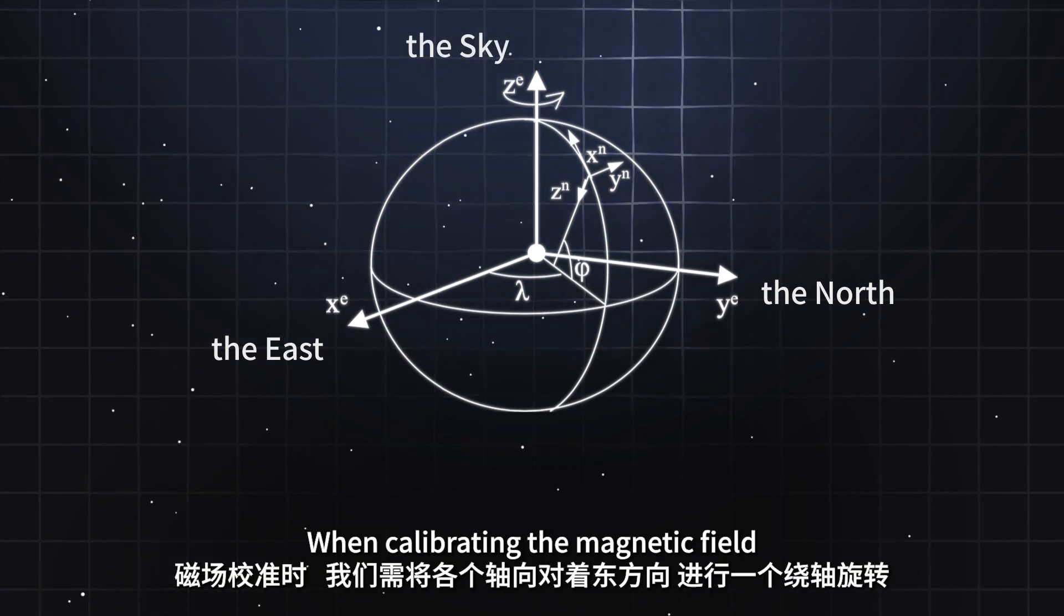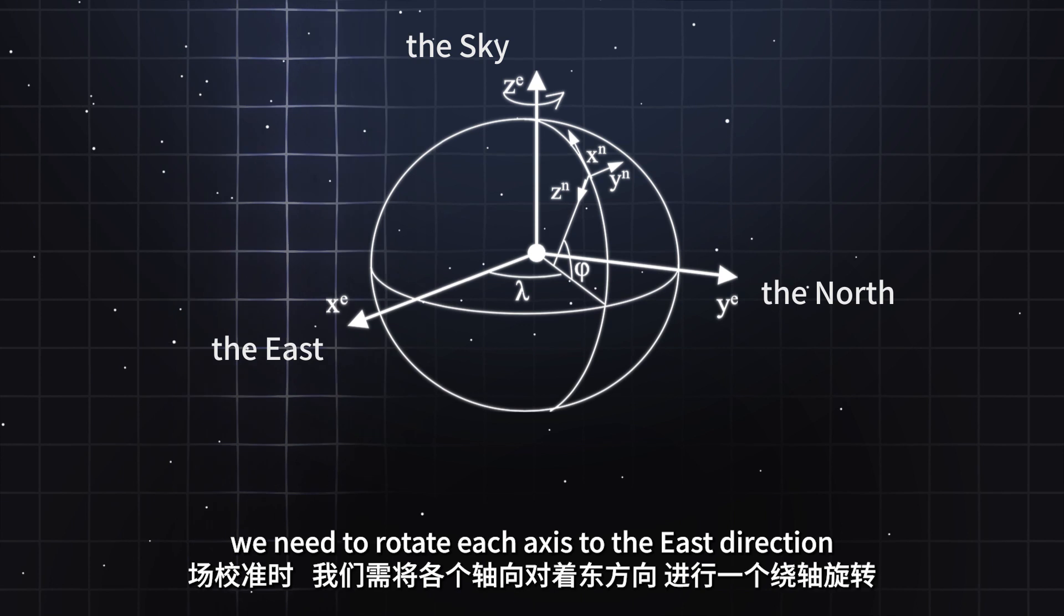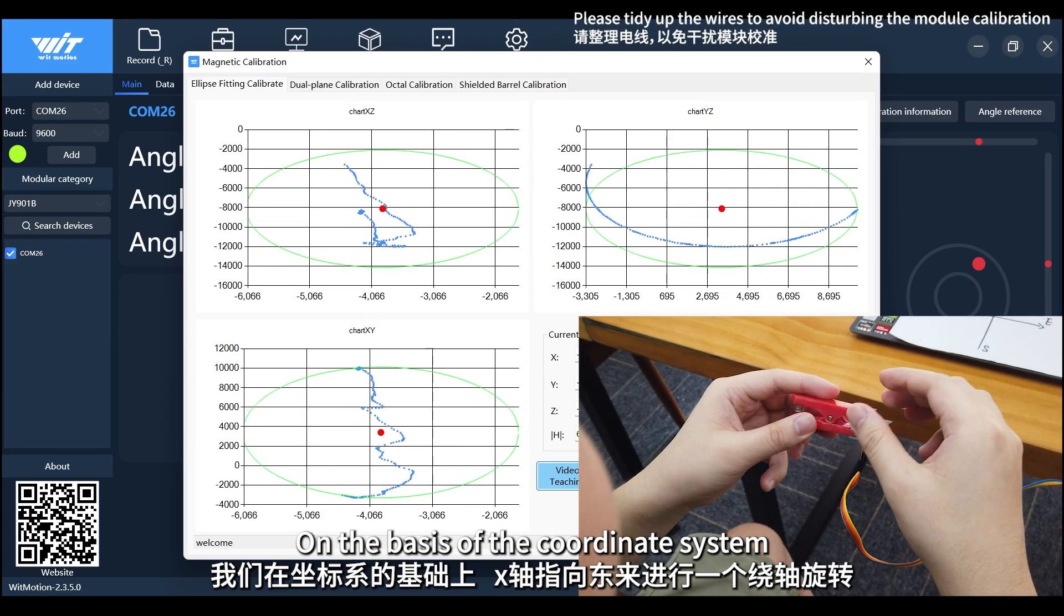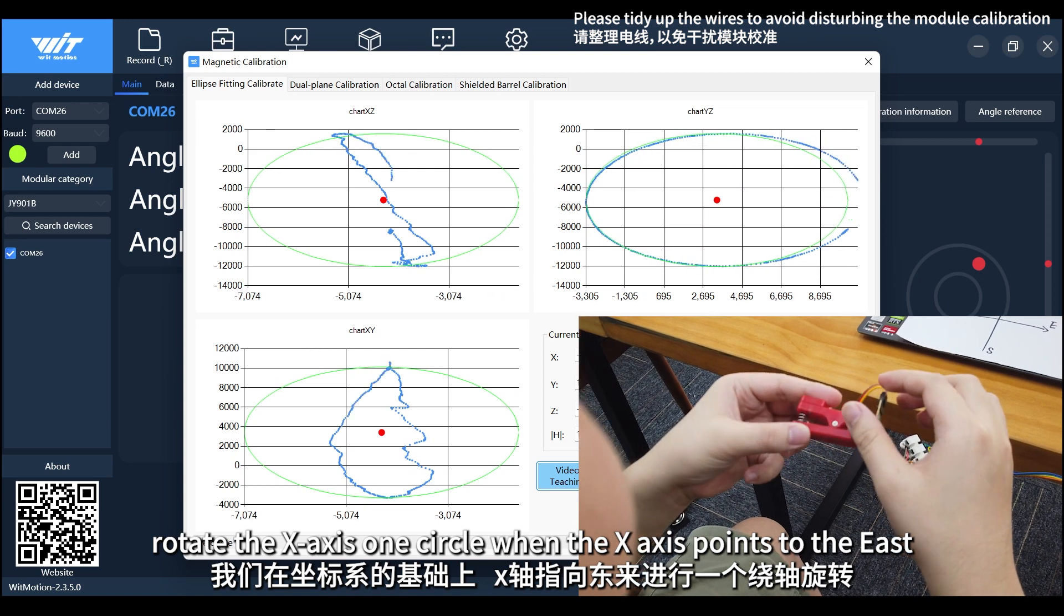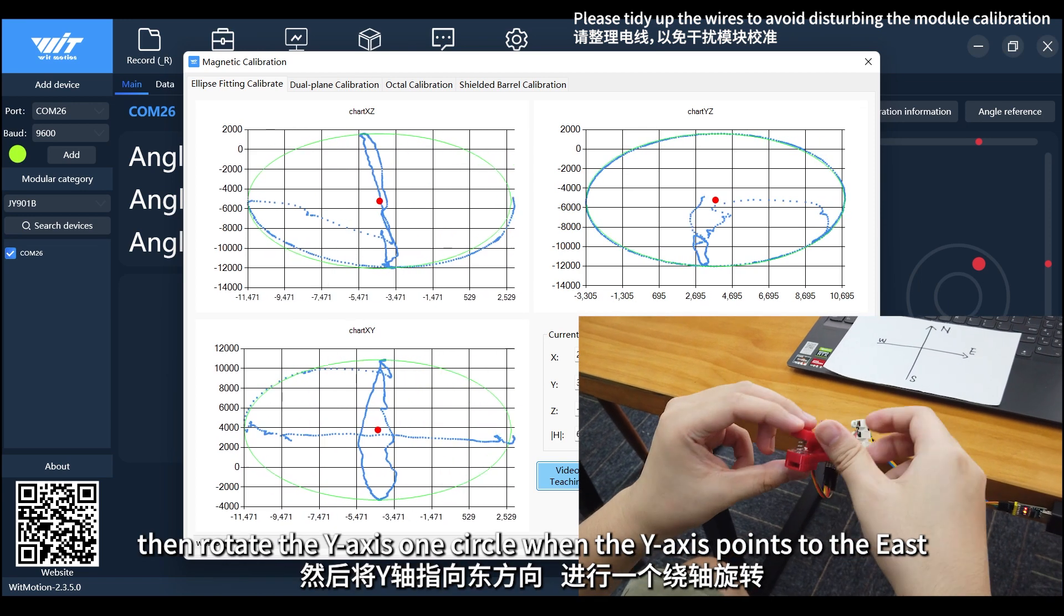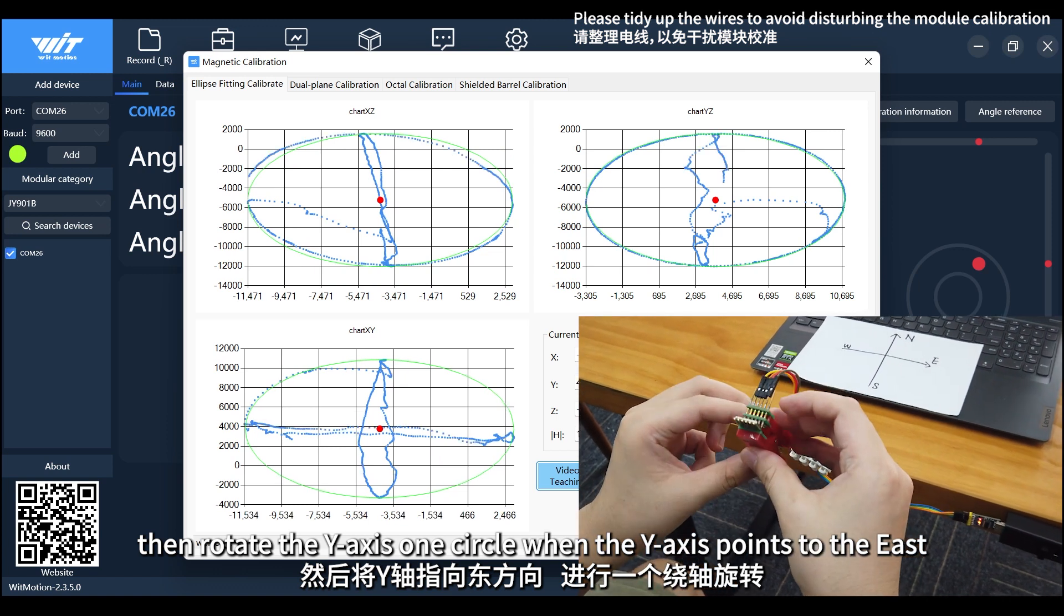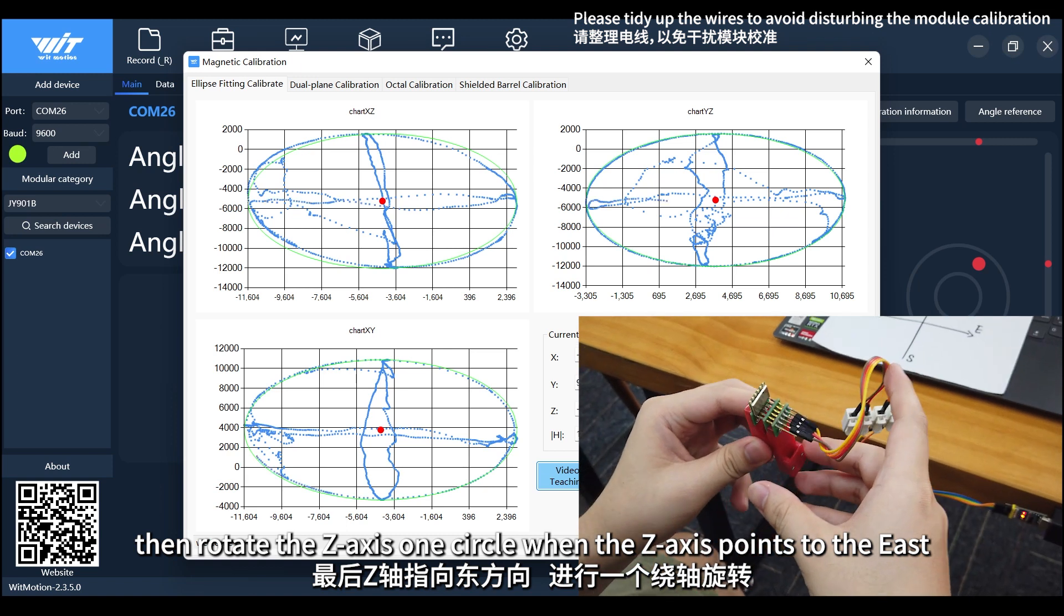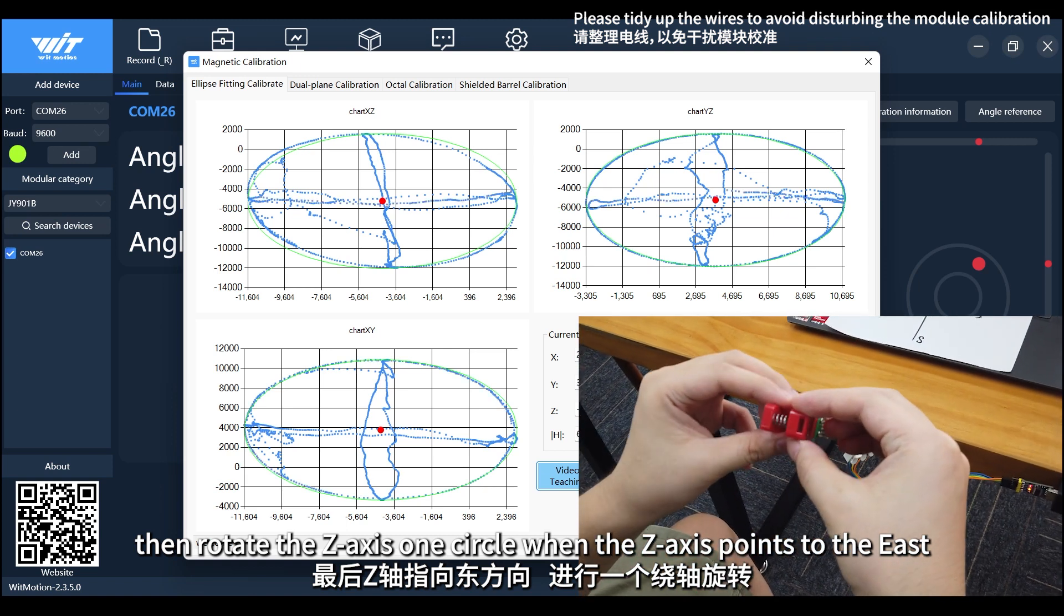When calibrating the magnetic field, we need to rotate each axis to the east direction. On the basis of the coordinate system, rotate the x-axis one circle when the x-axis points to the east. Then rotate the y-axis one circle when the y-axis points to the east. Then rotate the z-axis one circle when the z-axis points to the east.